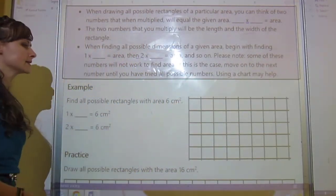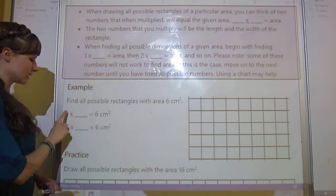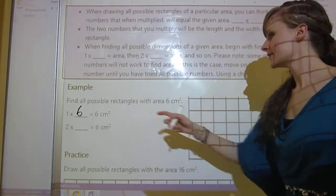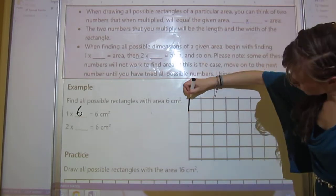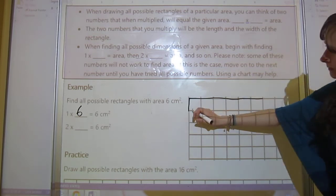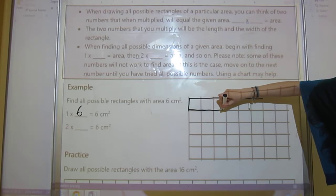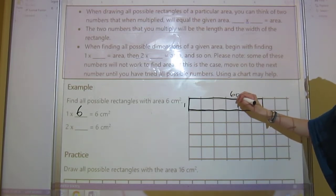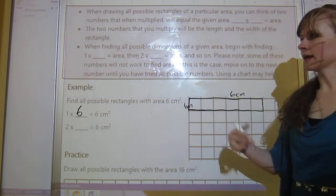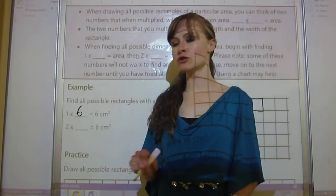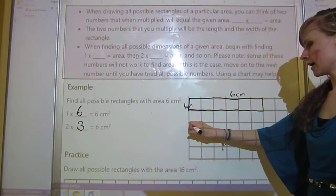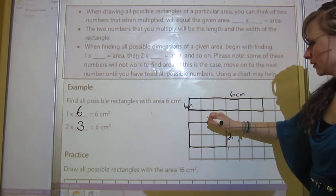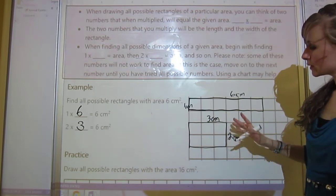Let's do this example together. It says find all possible rectangles with area 6 centimeters squared. We've got 1 times something equals 6, so 1 times 6 equals 6. Then we can draw a 1 by 6, so we've got 1 and then we go across: 2, 3, 4, 5, 6. We label 1 by 6, and these are centimeters. Now I've got 1, now I go on to 2. So 2 times 3 equals 6.